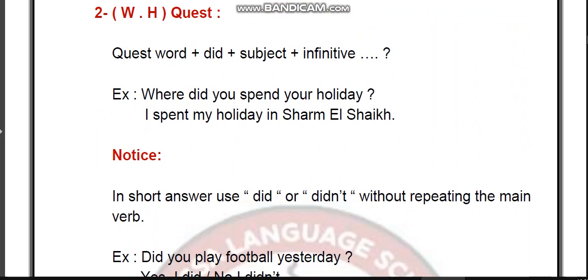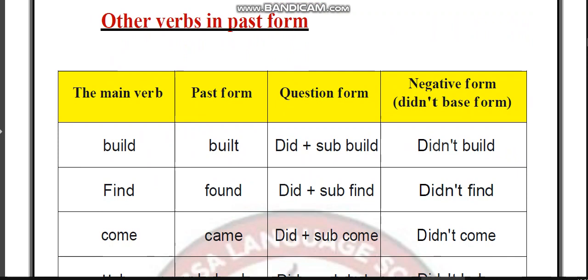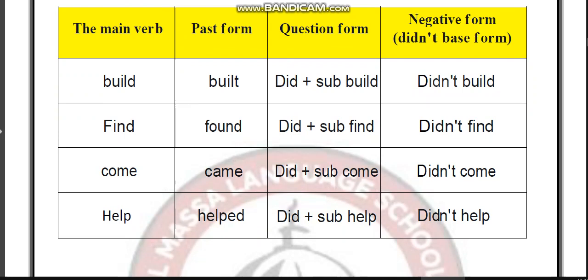Let's check other verbs in the past. Spell/spelled, find/found, come/came, help/helped. Practice: 'Did you spell correctly?' 'Did he find it?' 'Did she come?' 'Did they help?' Negative answers: 'No, he didn't find it.' 'No, she didn't come.' 'No, they didn't help.'